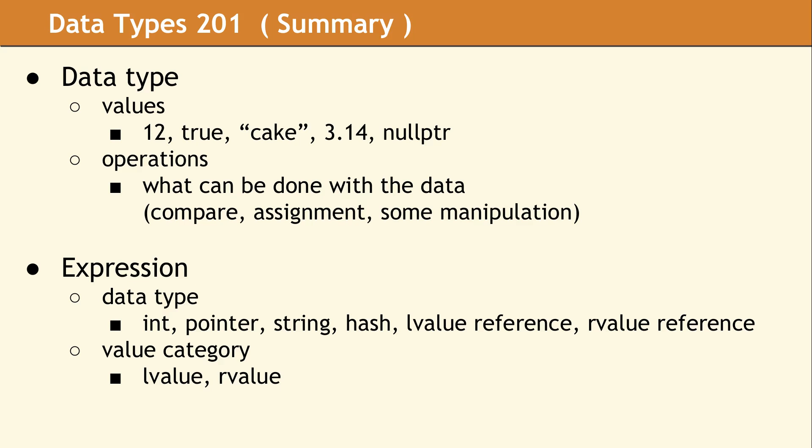Just to recap, a data type consists of values and operations, and an expression consists of a data type and a value category. The takeaway from this slide is that under an expression, the data type could be an L value reference or an R value reference, and the value category is L value or R value.